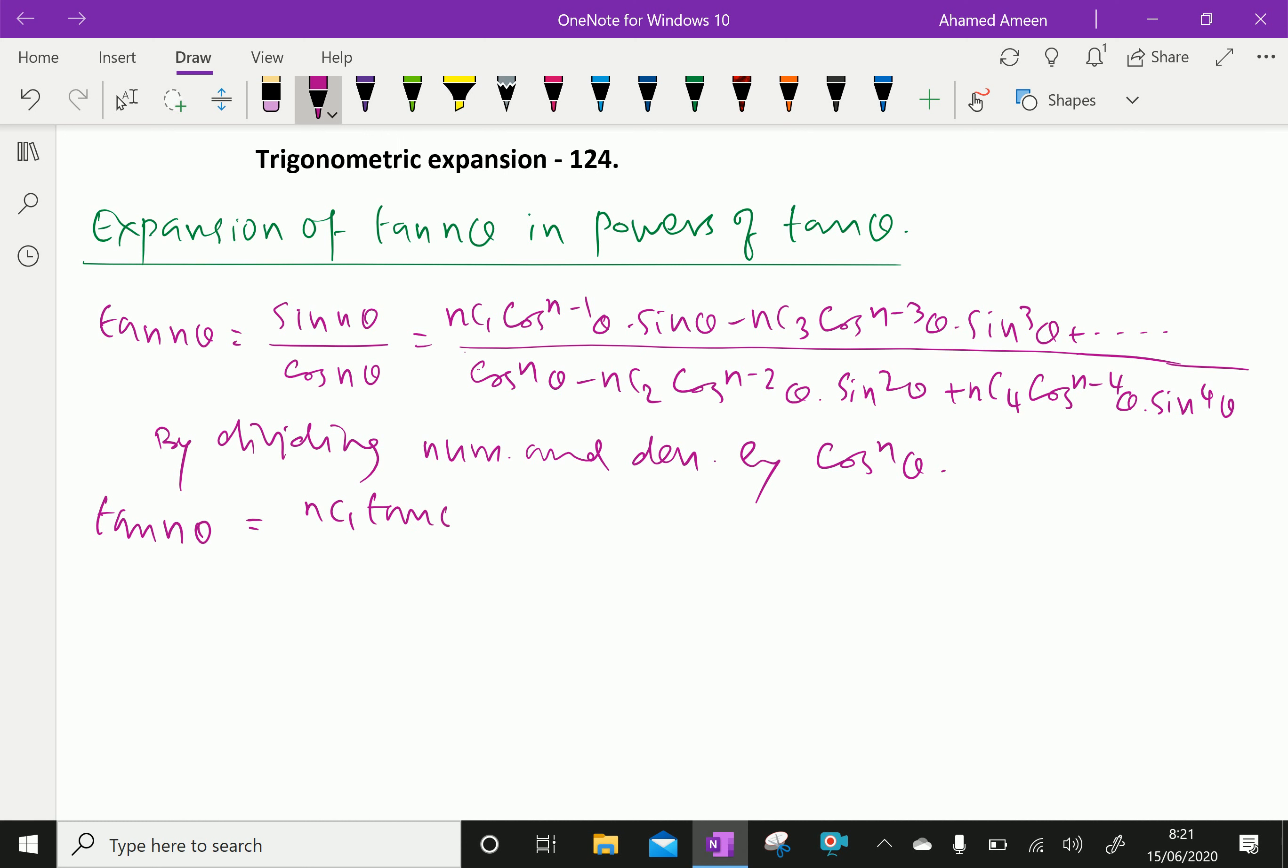The numerator becomes Nc1 tan theta minus Nc3 tan cube theta plus Nc5 tan power 5 theta, alternately changing signs.